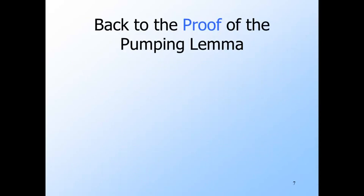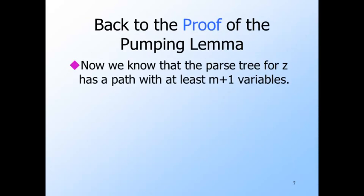Now we're ready to prove the pumping lemma. We just proved that Z's parse tree has a path of length at least m plus 2. Only the last node in any path can be labeled by a terminal, so there are at least m plus 1 nodes with variables along this path.